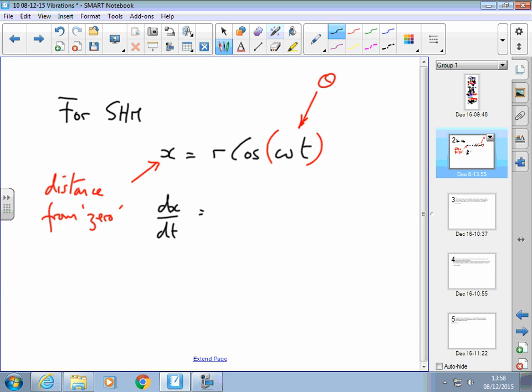And it will tell me velocity. The differential of cosine is minus sine and the number in front of the variable t comes out. So that would be minus r omega sine omega t. And we've now got a new function that tells us the velocity. So velocity equals minus r omega sine omega t.